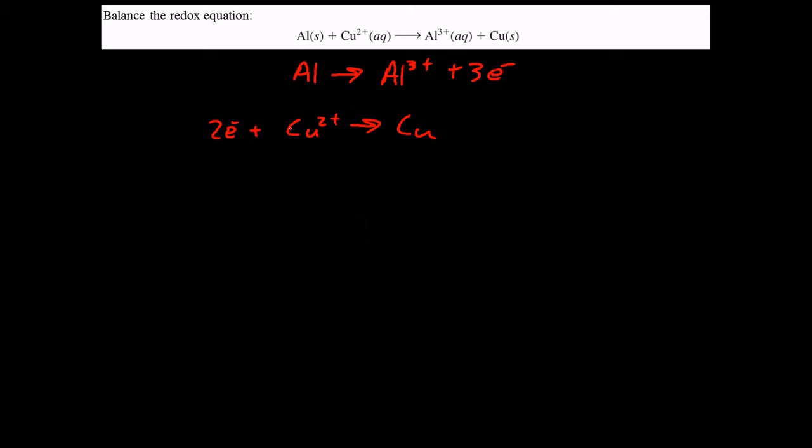The next step is to get the number of electrons that is being transferred to be the same on both sides, or in both half-reactions. We can only get electrons in packets of two from this half-reaction. We can only get electrons in packets of three from this half-reaction. And so, we're going to take everything here and multiply it by two, everything here, and multiply it by three.